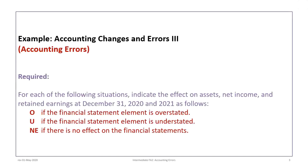This tutorial is basically self-contained. Each of the scenarios we'll discuss are included in the PowerPoint, but there is also a separate document that includes them as well. The requirement is for each situation to indicate the effect on assets, net income, and retained earnings as at December 31st, 2020 and 2021. We will use O for overstated, U for understated, and NE for no effect.